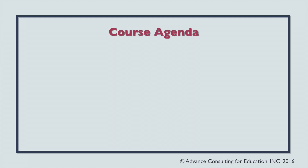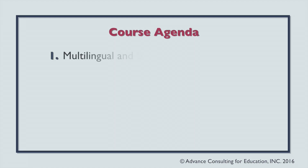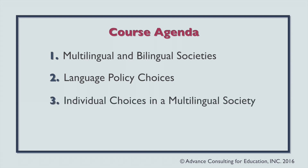We'll start by taking a look at what it means to be a multilingual or bilingual society — the implications at the society level for having multiple language groups. Then we'll look at language policy choices societies have to manage multiple languages. Finally, we'll look at individual choices within a multilingual society: if you are an individual functioning in a multilingual society, what are some of the choices you have when it comes to language use?